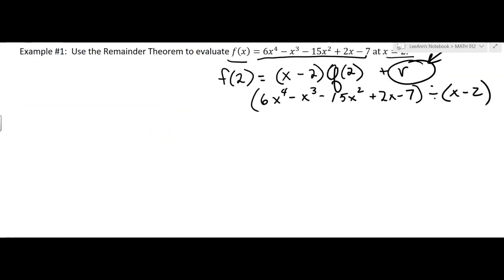Put 2 in the box. We'll pull off those coefficients. It looks like they're all there: 6, minus 1, minus 15, plus 2, minus 7. I should have 5 numbers there because it's a degree 4. So if the polynomial is degree 4, you've got to have one more number because of the constant.